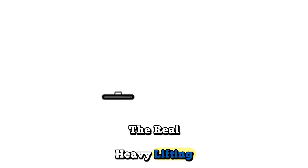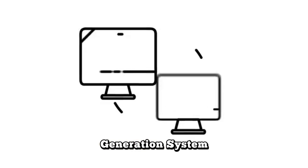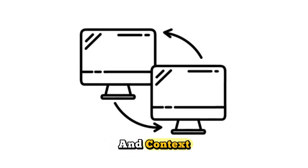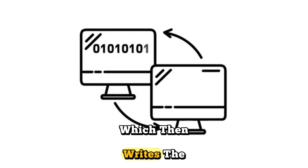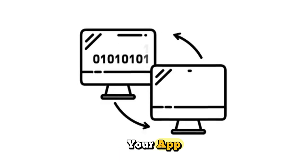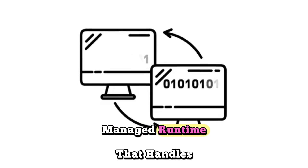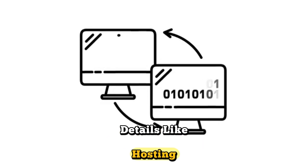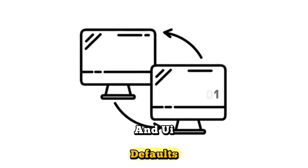The real heavy lifting is done by Spark's agent-based code generation system. It takes your prompts and context, feeds them to an AI agent, which then writes the code, runs it, and deploys your app. All of this happens on a managed runtime that handles the nitty-gritty details like hosting, data storage, authentication, and UI defaults.